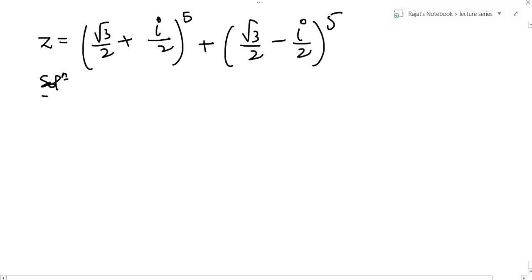There's this question that came in IIT that beautifully explains the use of De Moivre's theorem. We have z equals root 3 by 2 plus iota upon 2 to the power 5, and they are asking for the real part of z or the imaginary part. How to do it? Very simple.